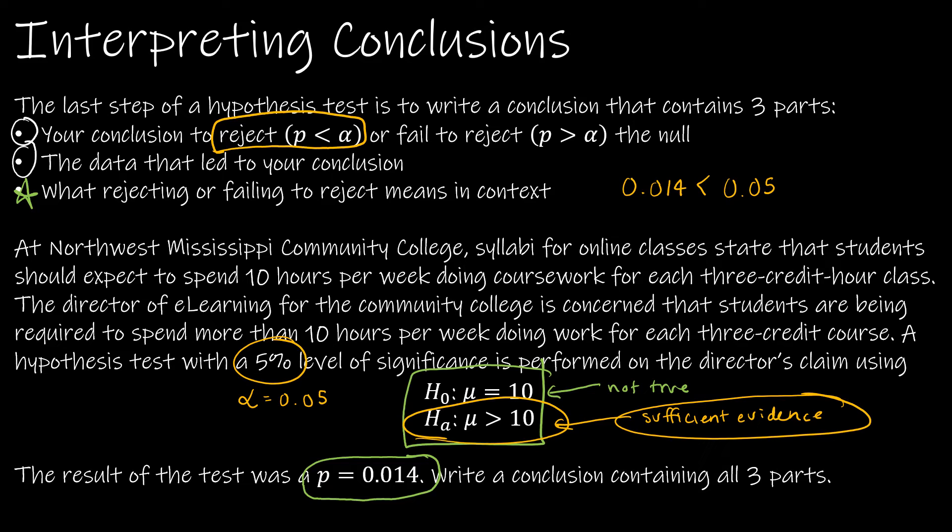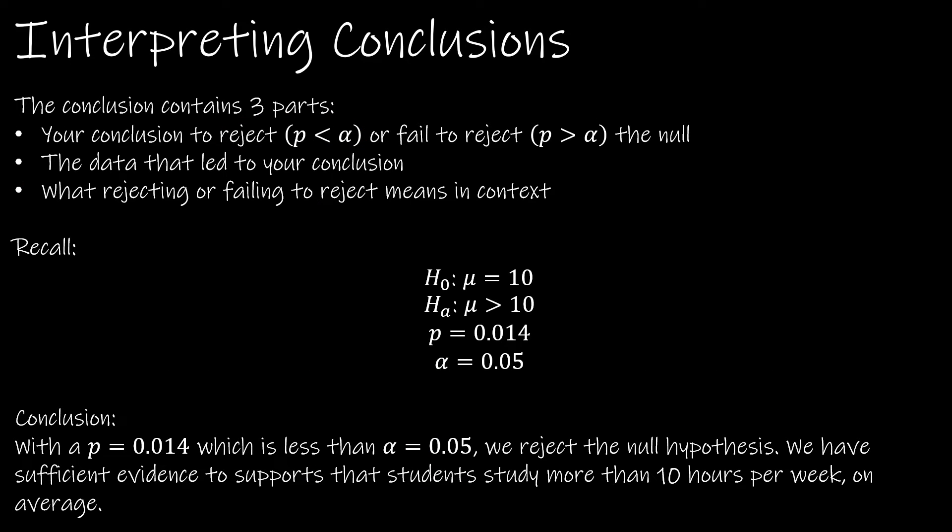Let's take a look at the full conclusion. With a p-value of 0.014, which is less than alpha of 0.05, we reject the null hypothesis. We always have evidence to either support or not enough evidence to support the alternative. We're always going to be talking about whether we're rejecting or failing to reject. We always talk about the alternative when we are writing our conclusion. In this case, because we reject the null, we're saying we have enough evidence to support that students study more than 10 hours per week on average.